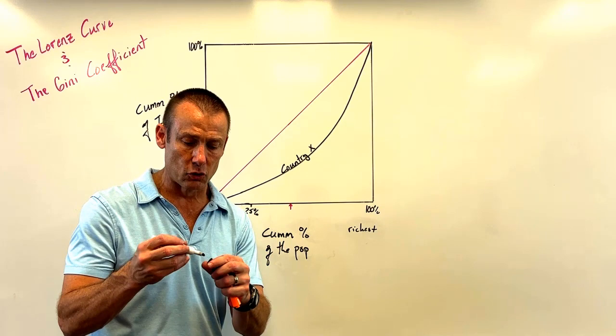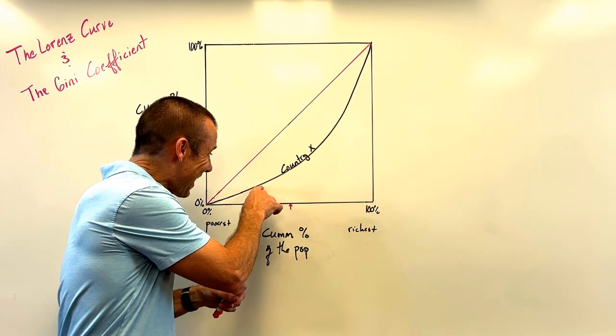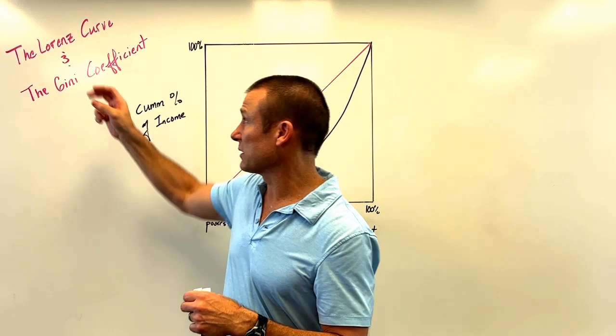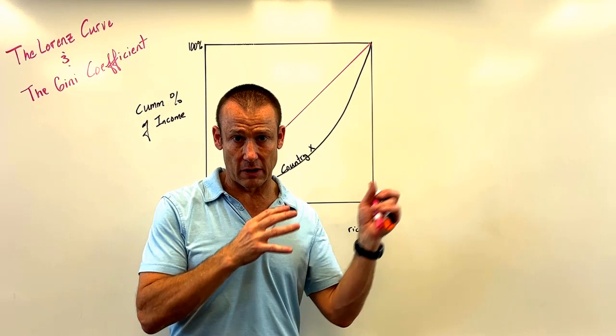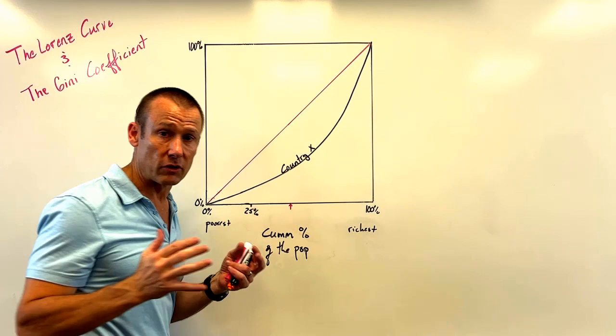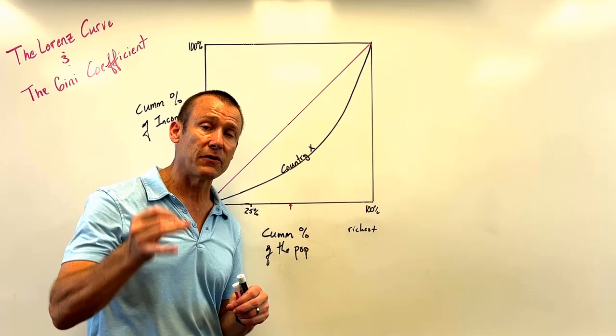The Lorenz curve is the black line on the graph, labeled country X. Every country has its own Lorenz curve. The pink line is a reference line drawn at a 45-degree angle, and it represents perfect equality of a country.